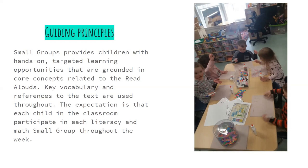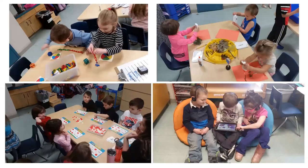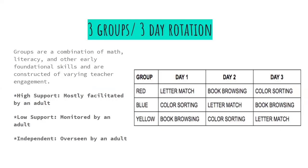Here are pictures of children working on maps, color and counting activities, nature activities, stories and letters. In the curriculum, small groups are based on a three-group, three-day rotation — which can be a little confusing, which is why there's a graph to show how it works.